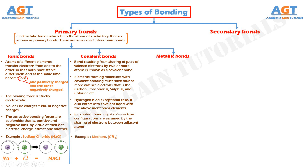Two atoms that are covalently bonded will each contribute at least one electron to the bond, and the shared electrons may be considered to belong to both atoms. Covalent bonding is schematically illustrated in this figure for a molecule of methane. The carbon atom has four valence electrons, whereas each of the four hydrogen atoms has a single valence electron. Each hydrogen atom can acquire a helium electron configuration when the carbon atom shares with it one electron. The carbon now has four additional shared electrons, one from each hydrogen, for a total of eight valence electrons and the electron structure of neon. This is an example of a covalent bond.